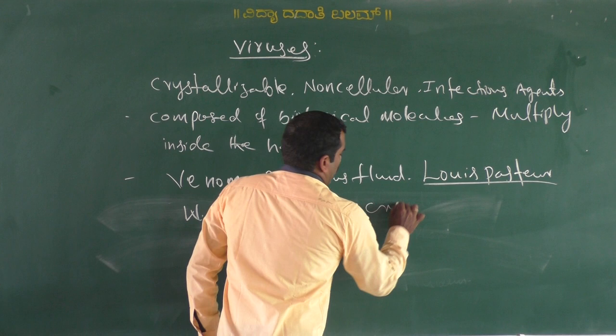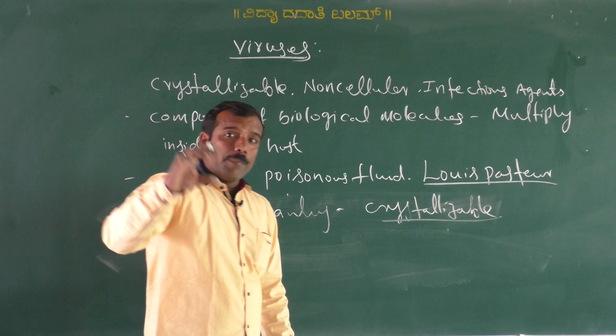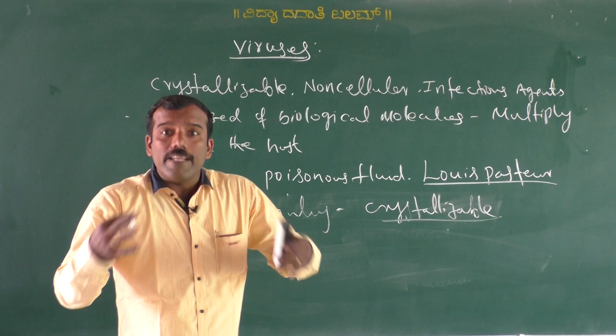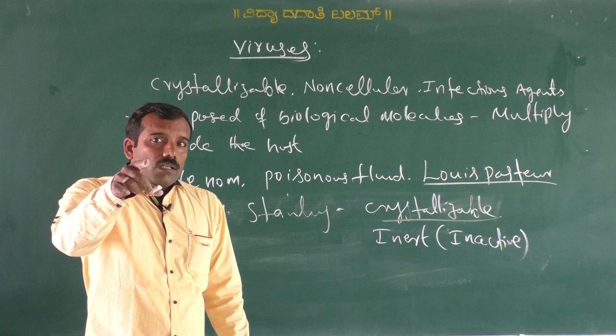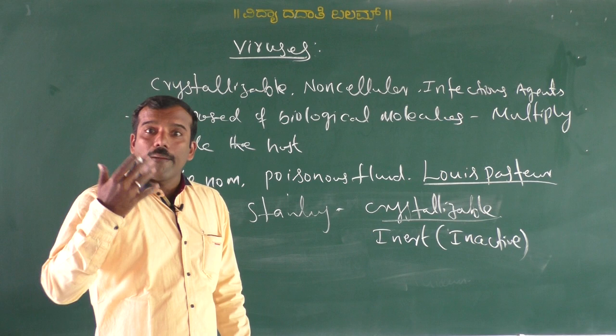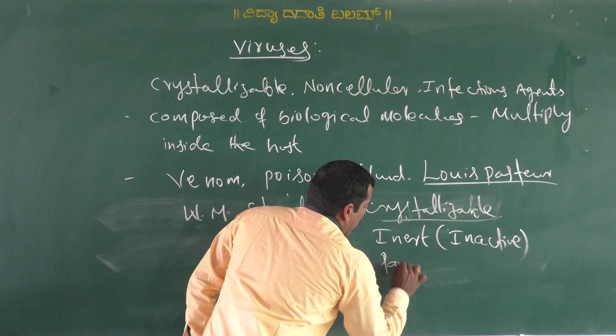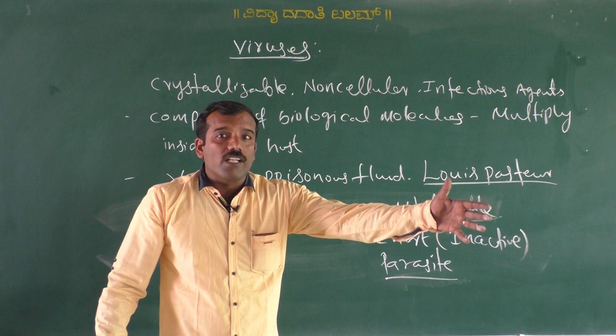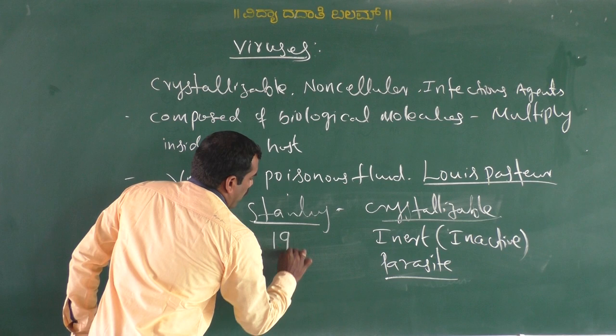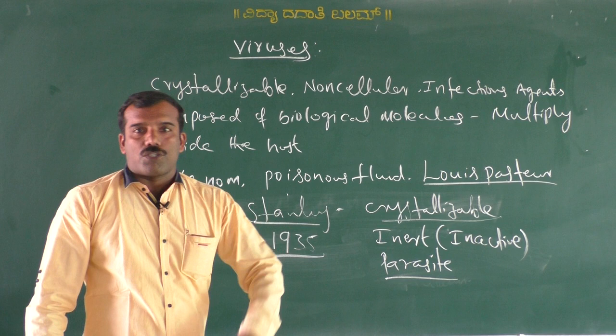W.M. Stanley showed that viruses are crystallizable — they can be stored in a bottle like other chemicals and they are inert, meaning inactive, when outside the host. But when the virus enters into the host, they are living, they multiply, and they cause disease. Hence they are called obligate parasites. Without a host, the virus cannot survive or multiply. In the year 1935, he first crystallized the virus.